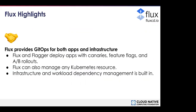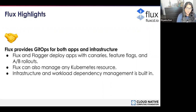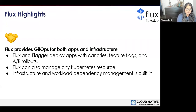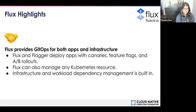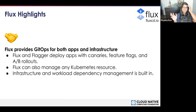The first statement is that Flux provides GitOps for both apps and infrastructure. Flux, along with Flagger, actually deploys apps with canaries, feature flags, and A/B rollouts — so you can utilize any of your progressive delivery needs. There is a great self-led workshop that includes Flagger at eks.handson.flagger.dev. Also, Flux can manage any Kubernetes resource, so basically everything you're already using, Flux can manage. It works very well with the whole Kubernetes environment and was created with all of that in mind. Infrastructure and workload dependency management is also built in.